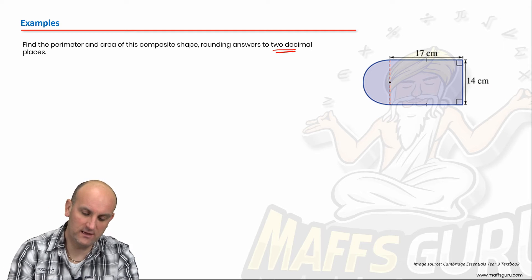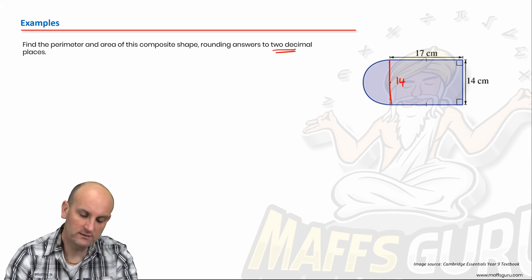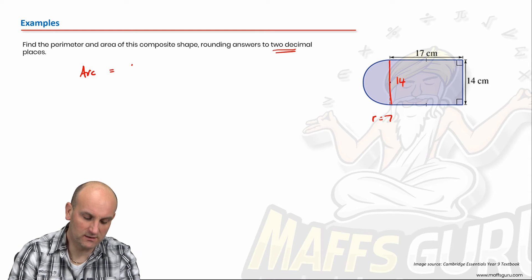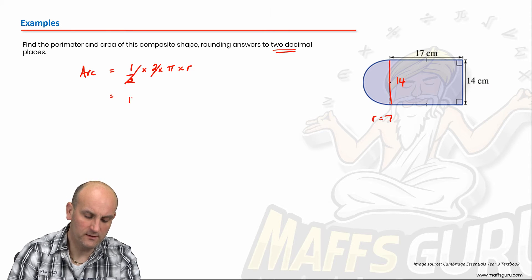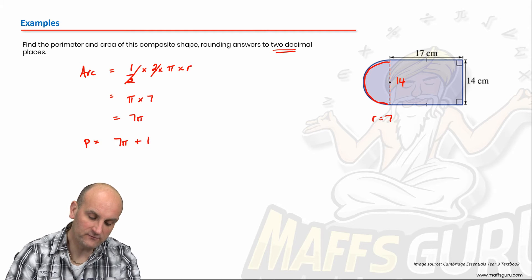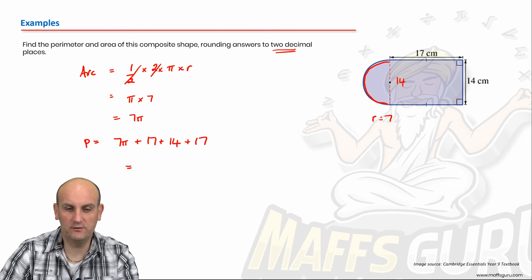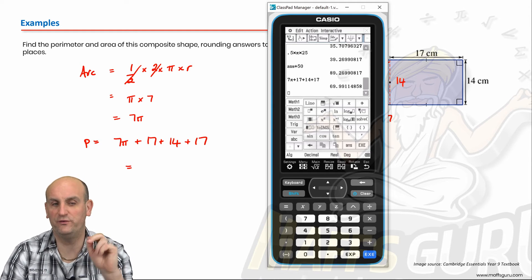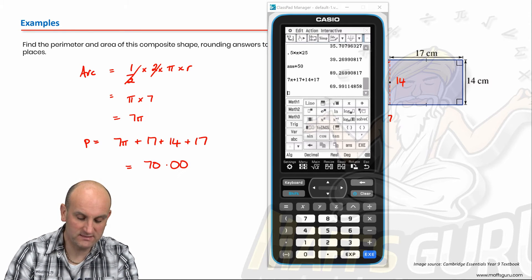Have a go and see if you can beat me to the answer! This length of 14 means the circle has radius = 7. Finding the arc length first: fraction of circle is ½ (semicircle), times 2π times the radius. A half of 2 is 1, so that's just π × 7 = 7π. That's the arc length — this curved bit. So the perimeter is 7π + 17 + 14 + 17. Firing up the calculator: 7π + 17 + 14 + 17 gives 69.99..., which rounds to 70.00 centimetres to two decimal places.